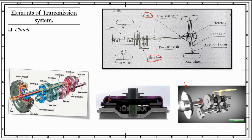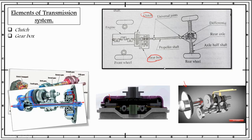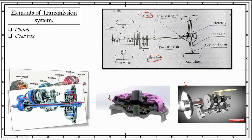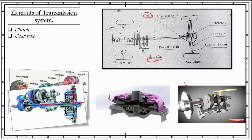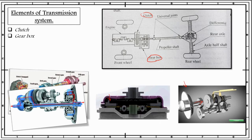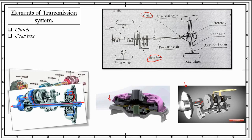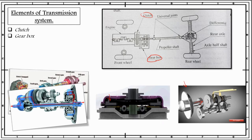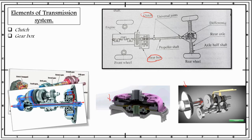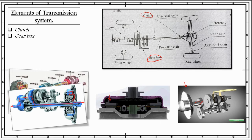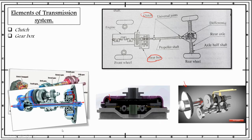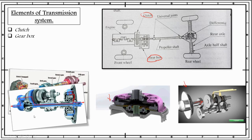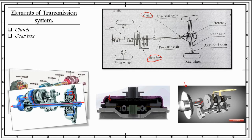Next is the gearbox. As we can see in this figure, the gearbox comes right after the clutch, so whatever power is being transferred from the clutch is then transferred to the gearbox. The gearbox provides variable speed or torque to the driving wheels according to variation in resistance and tractive effort of the vehicle. It also allows the vehicle to move in reverse direction. The gearbox basically consists of a set of gears with varying gear ratios, and depending on the output requirement we can select different gear ratios. This is just a brief overview; the detailed study will be explained in future lectures.